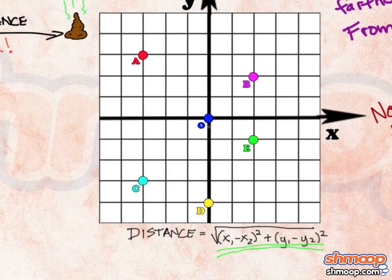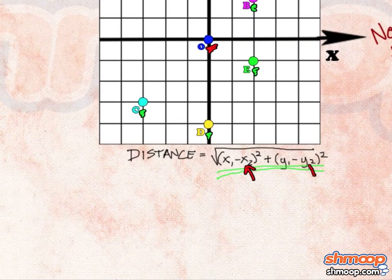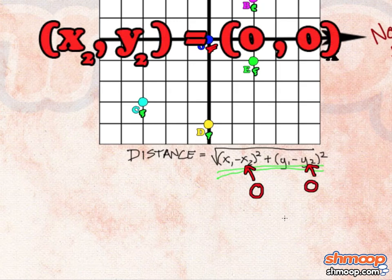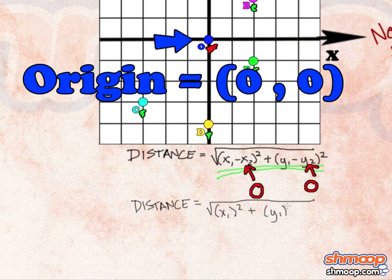Well, we can find the distance between Bossy and each of the five cows by substituting x2y2 equals 0, 0 into the distance formula. Because Bossy is at the origin, or 0, 0.